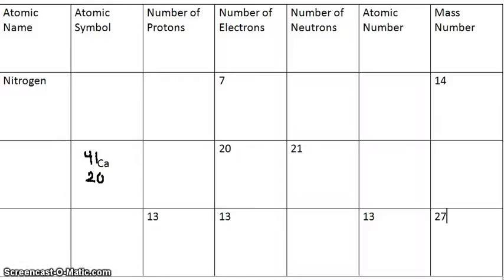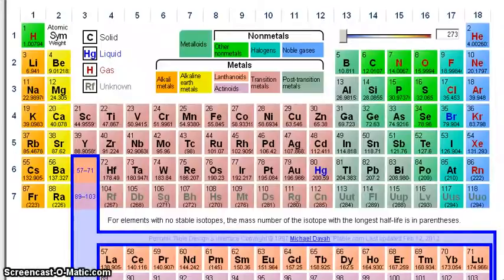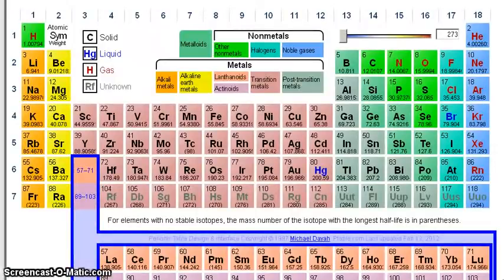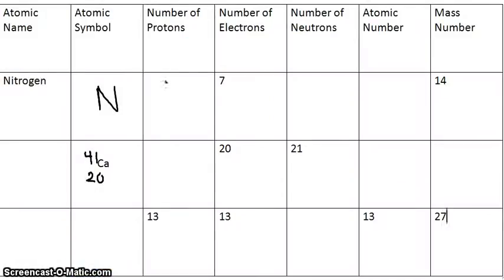Our example number one: we have nitrogen. We can go to the periodic table and find nitrogen, which is over here. The atomic symbol is N — it's this letter given right there. We can go back to the chart and put in N. Then we go to the number of protons, which is its atomic number. You get the atomic number from right here, which is 7. You can go back and fill in 7.